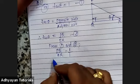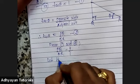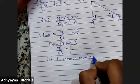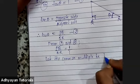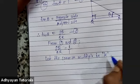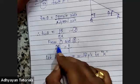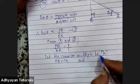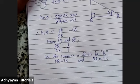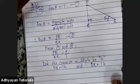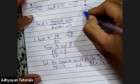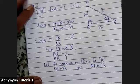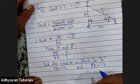Since PQ/QR = 1, I can call it 1 upon 1. Let the common multiple be K (some school teachers use K). So PQ = 1K and QR = 1K. Can we find PR? Yes — by Pythagoras.